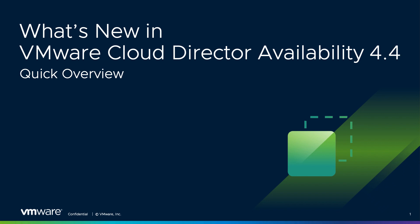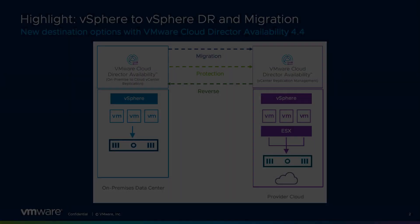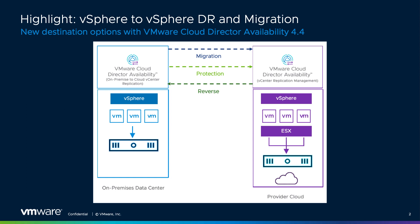Hello and welcome to our quick VMware Cloud Director Availability 4.4 release overview. We would like to outline one of the new features: vSphere to vSphere DR and migration. It allows replicating workloads directly to vSphere-based clouds in the same straightforward fashion typical for VMware Cloud Director Availability.